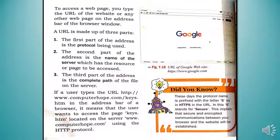Dear students, please open page number 144. To access a web page, you type the URL of the website on the address bar of the browser window. In figure 7.10 you can see an internet browser is open, and below the title bar is the address bar where a proper address of a website is entered.